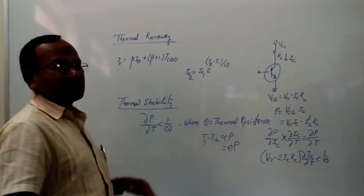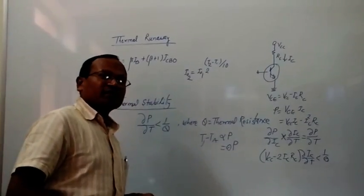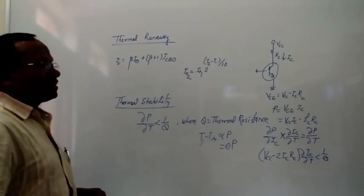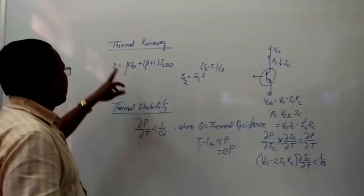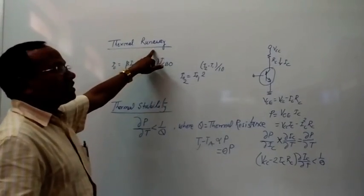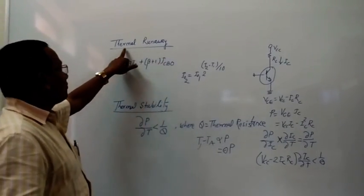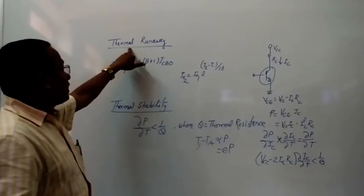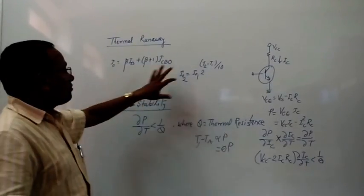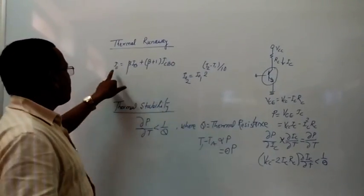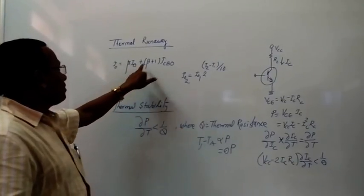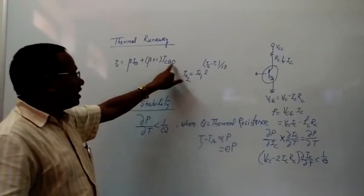Thermal runaway is an important process that occurs in any bipolar junction transistor. Thermal runaway is something which is running away with the effect of temperature. The collector current IC is given by β·IB plus (β+1)·ICBO.